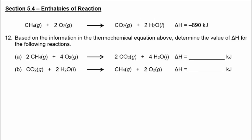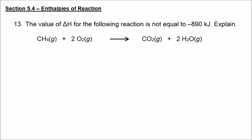Number twelve is a reminder that when you multiply all coefficients in an equation by some number, you must also multiply the value of delta H by that number. When you reverse a chemical reaction, you must change the sign of delta H. In 12a, everything has been doubled so the value of delta H is doubled as well. In 12b, we flipped the equation around so now delta H is positive 890.